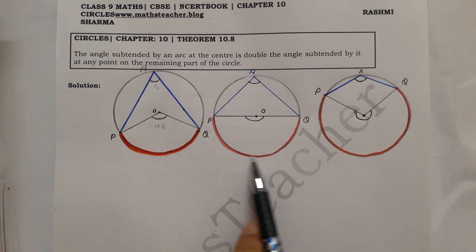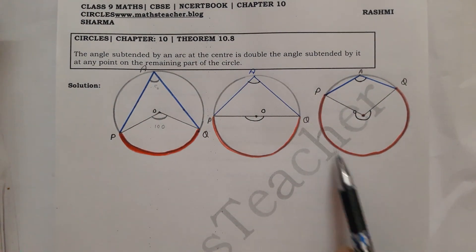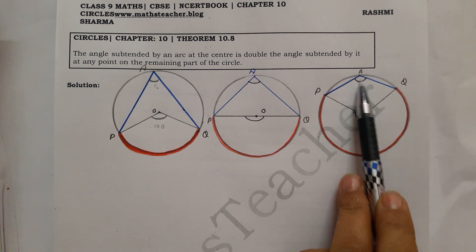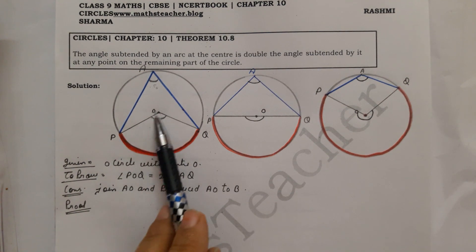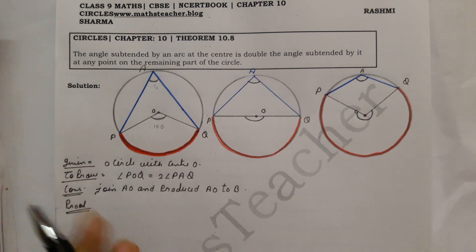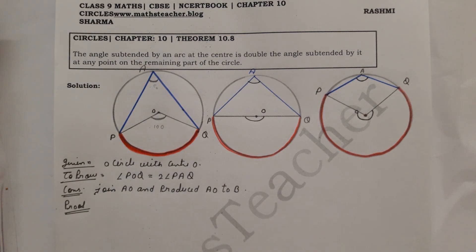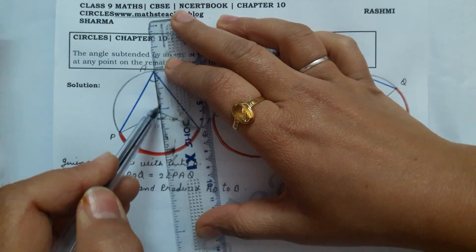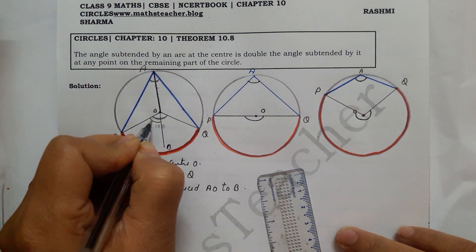We draw a diameter here, so PQ which is equal to your arc — here there is minor arc, and the major and minor arc for the third condition. Given: the circle with center O. To prove: angle POQ equal to double of angle PAQ. For the construction, we join A to O — we join AO because this will be our radius — and then we produce it so that we can use these angles.